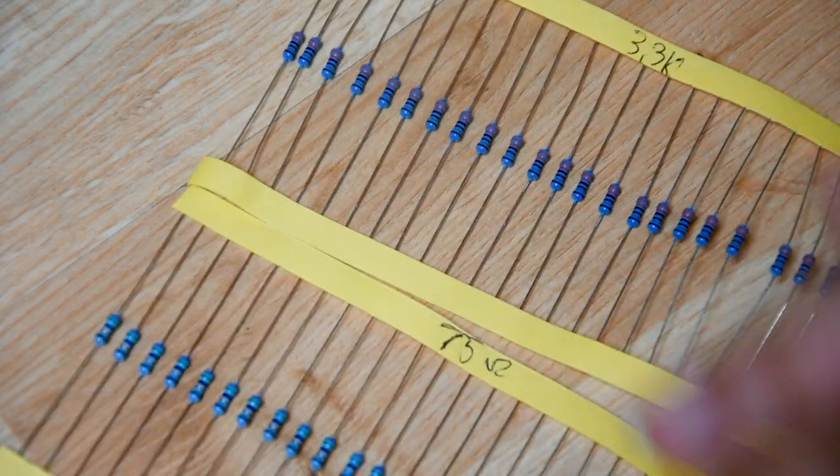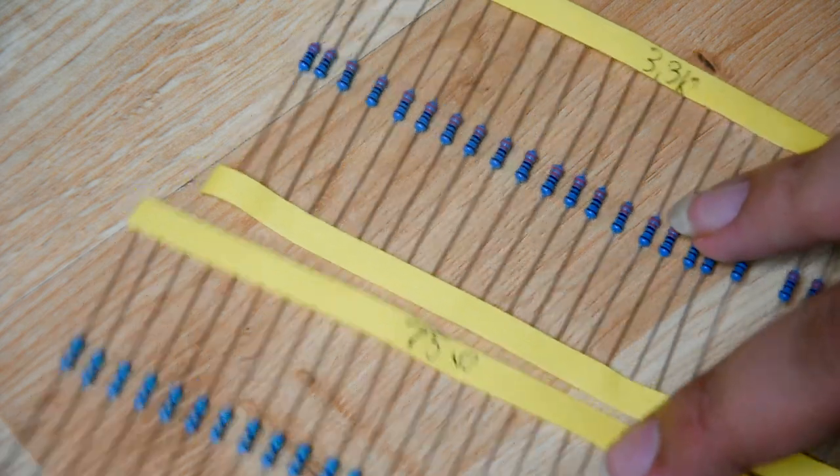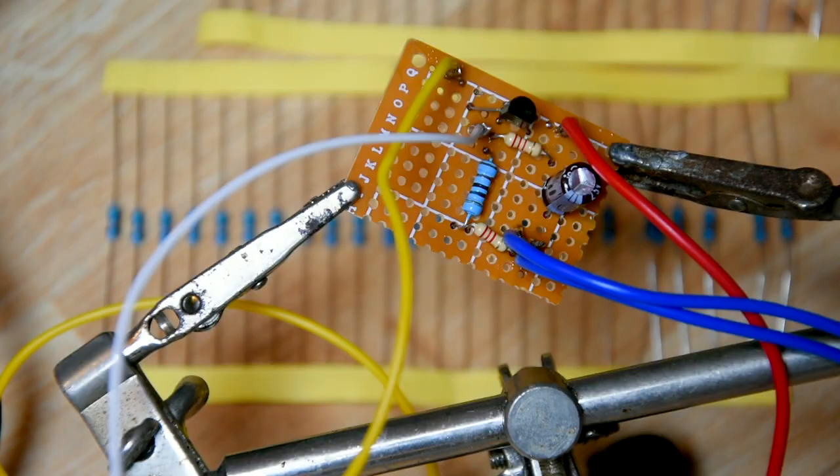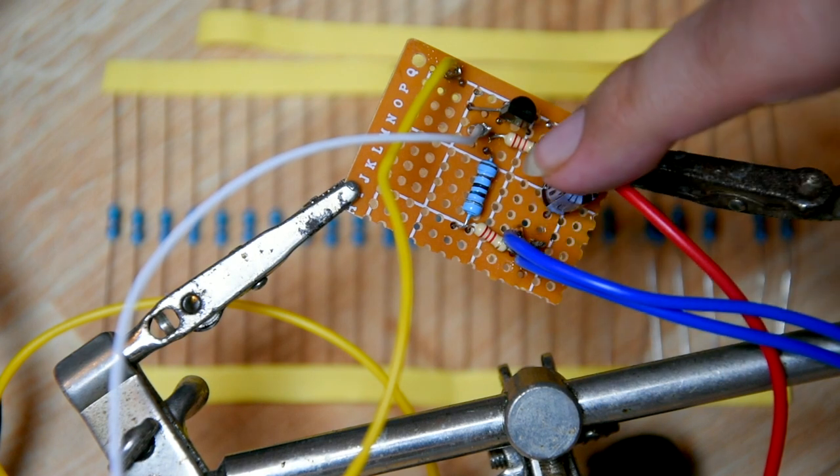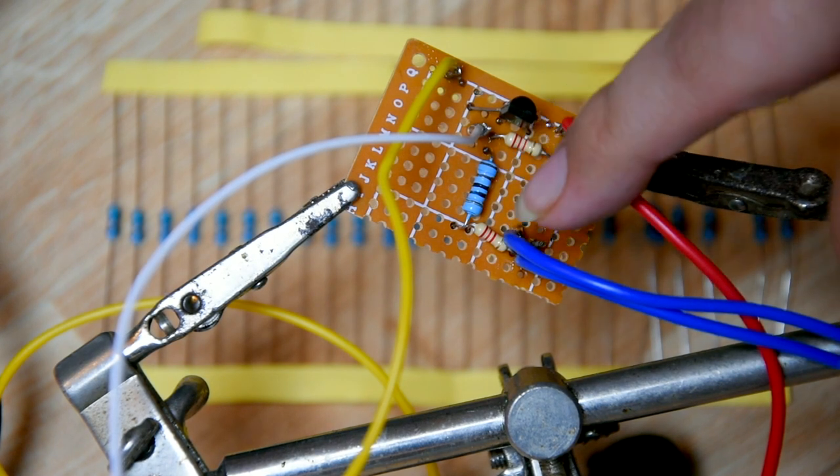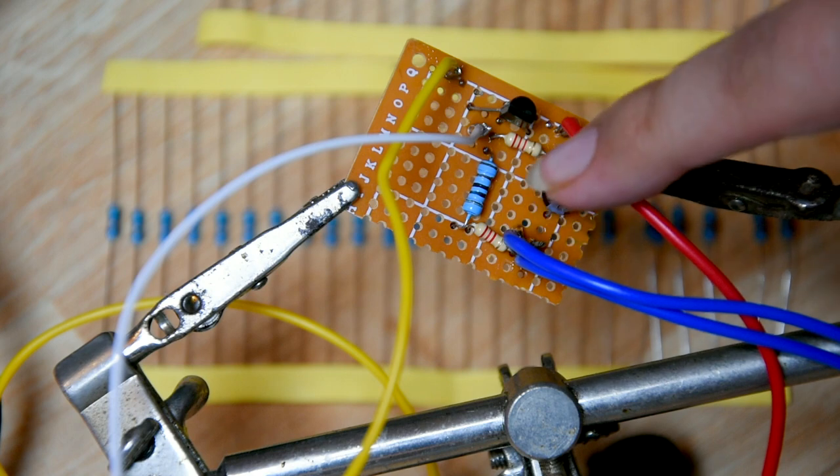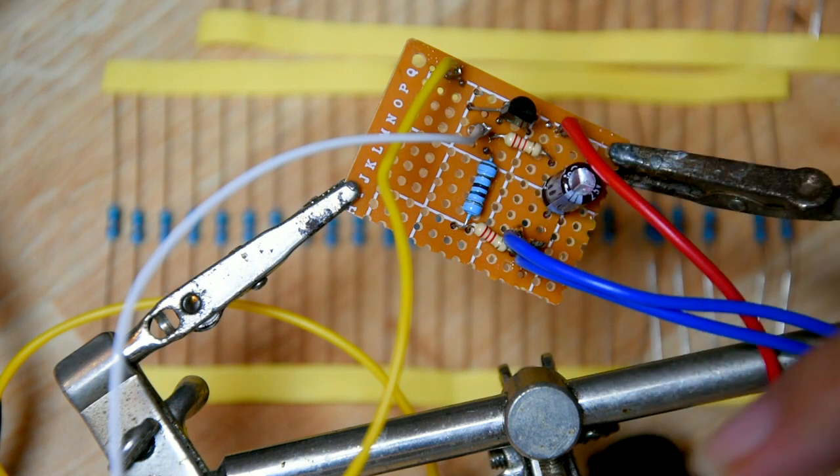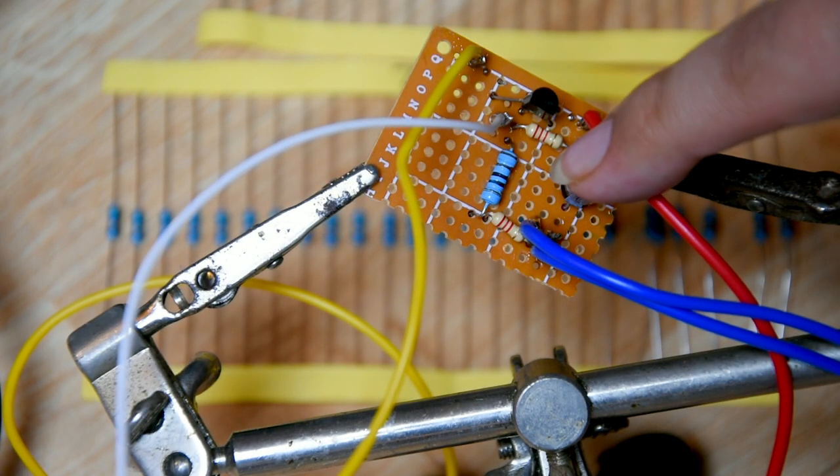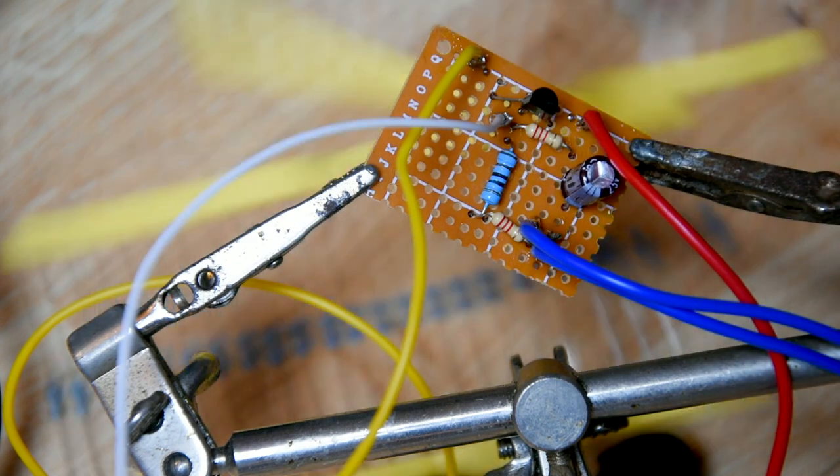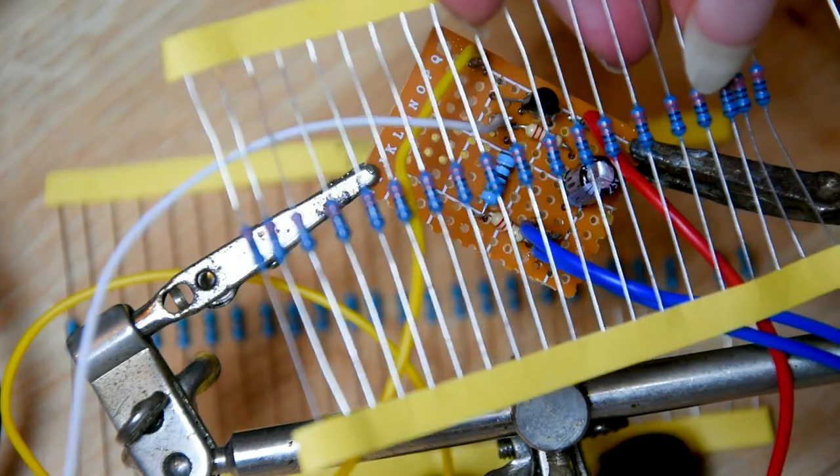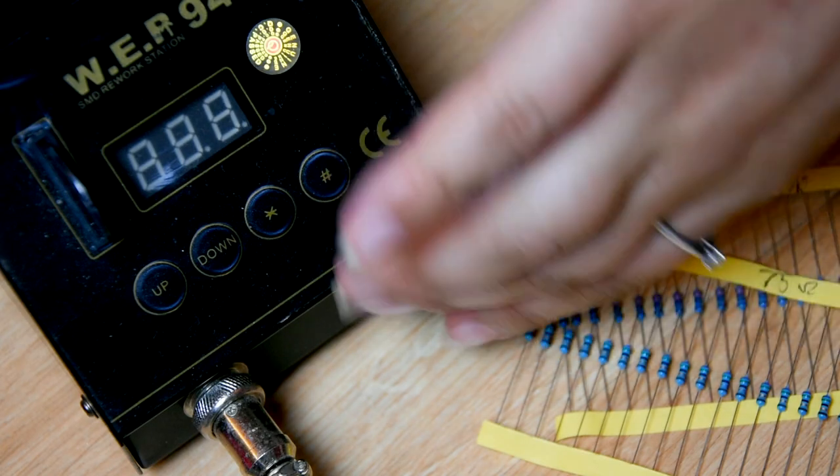And I basically ordered a 3.3k. So what I'm going to do is this freaking monstrosity here, where I've joined two resistors together in series trying to add it up to 3.3k, I'm going to cut these out and just put a normal 3.3k one in here. So yeah, let's begin with that now. Okay, so 3k3 here. That's a nice gorgeous blue, isn't it? It's my favorite blue.